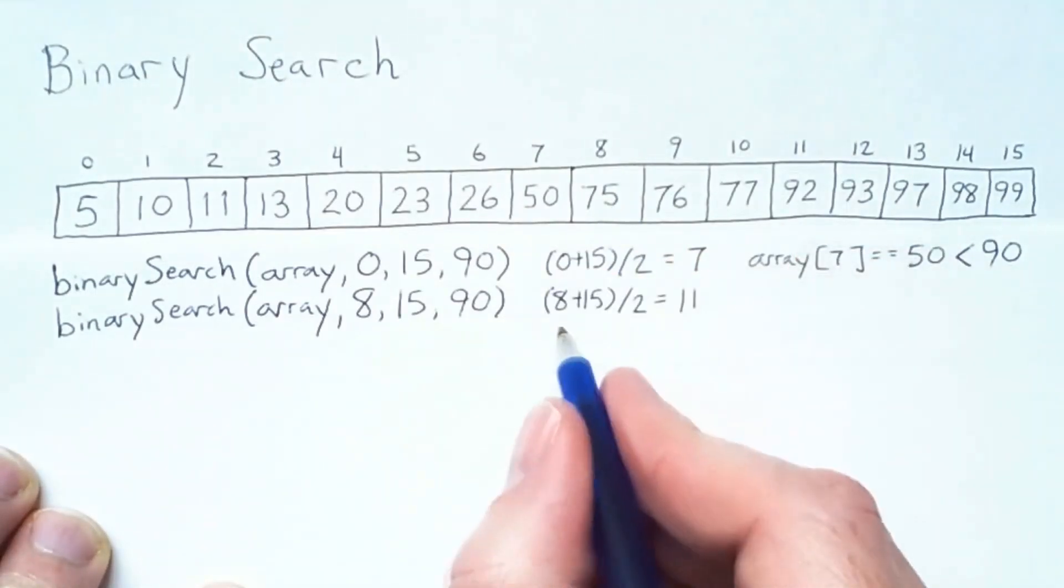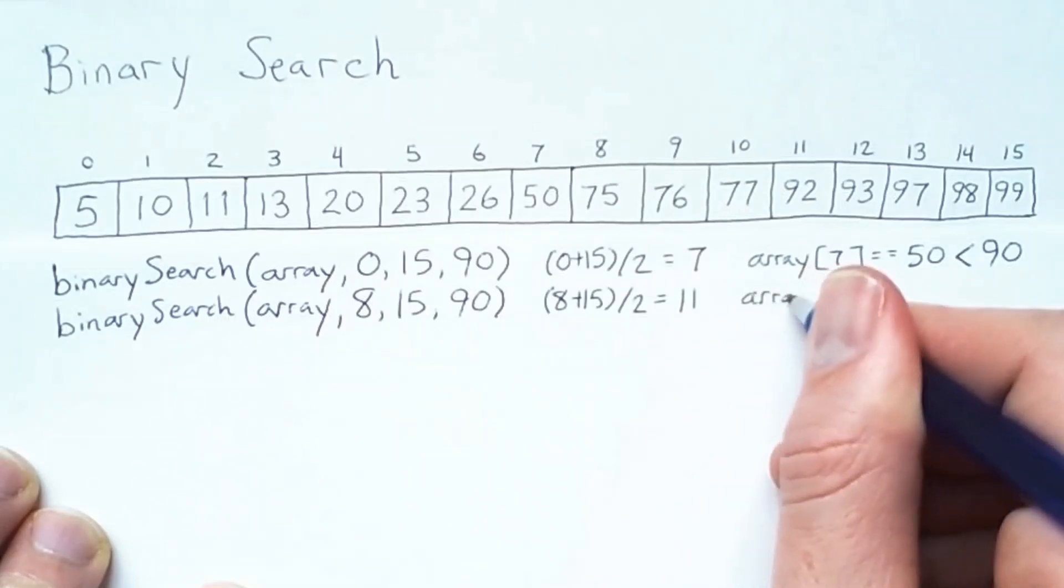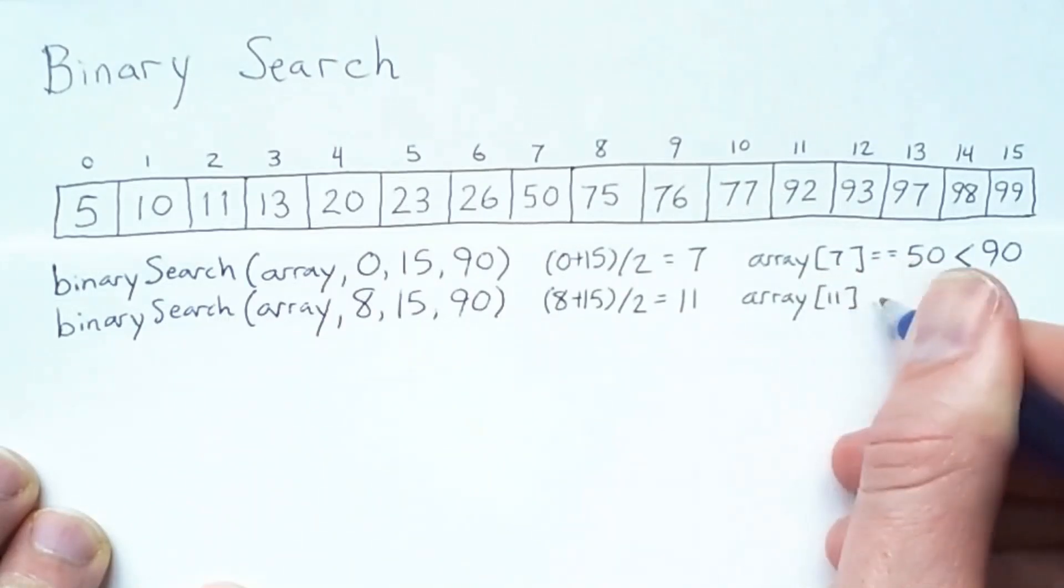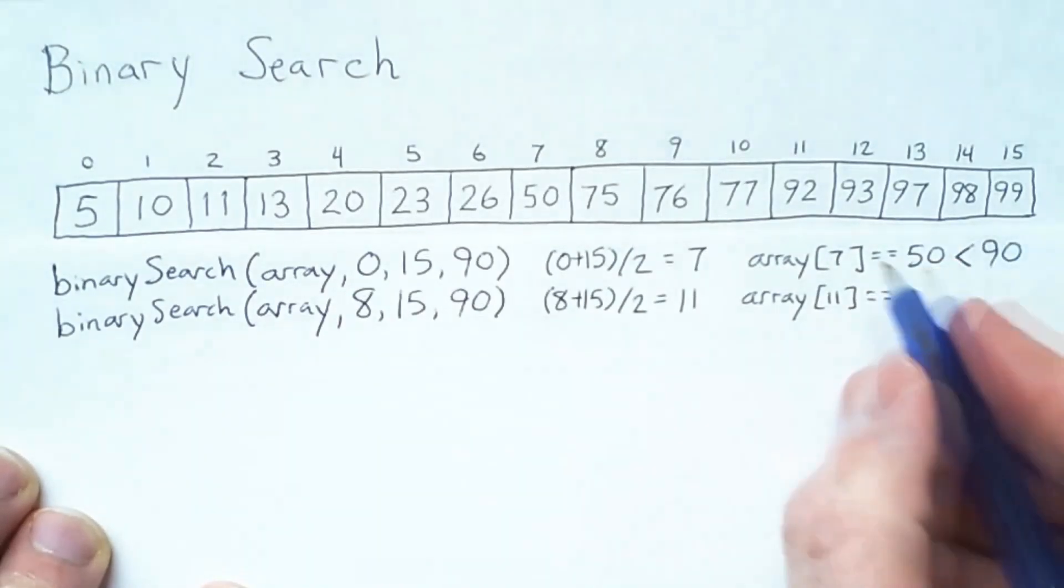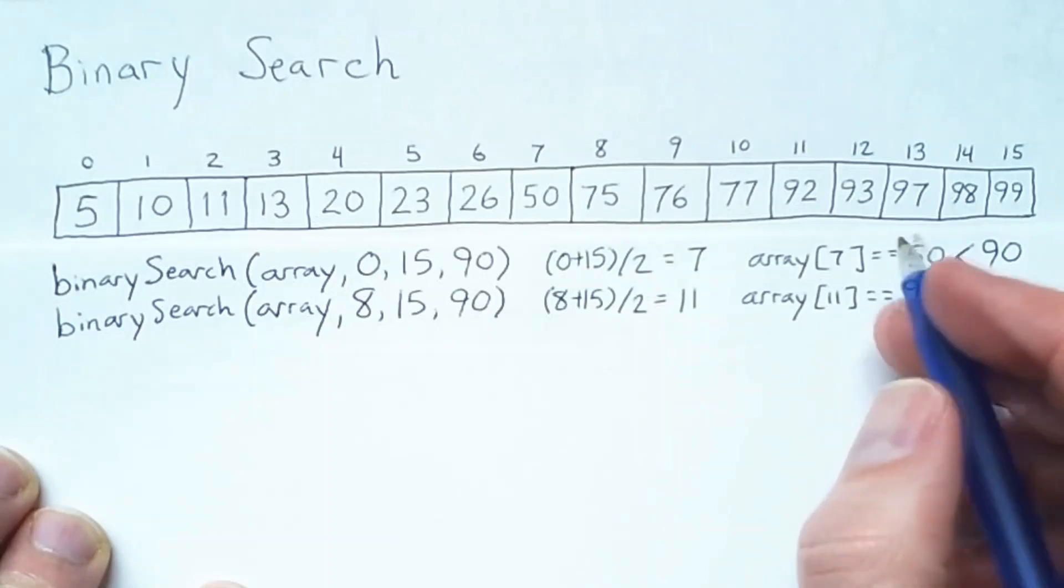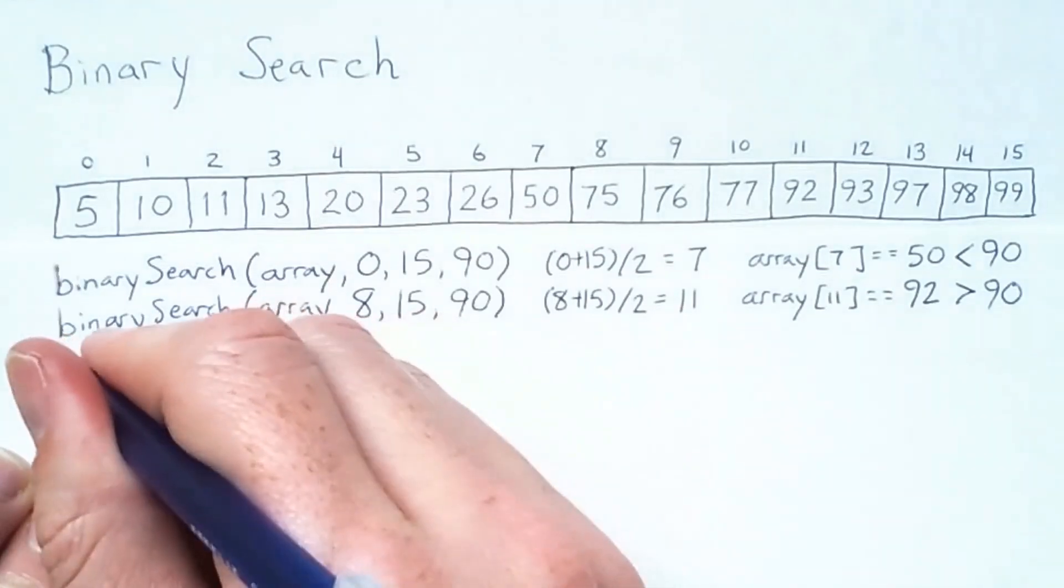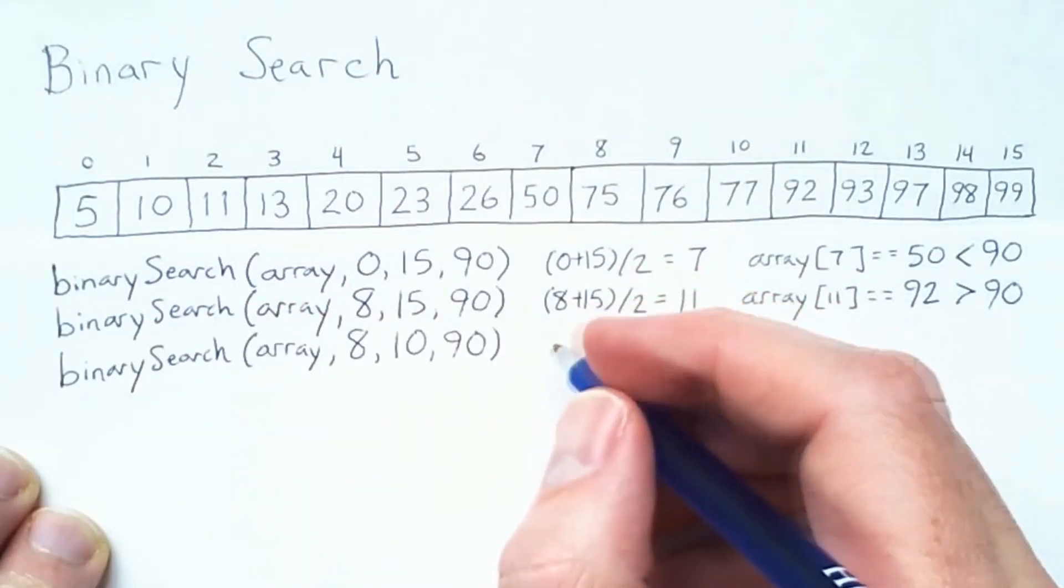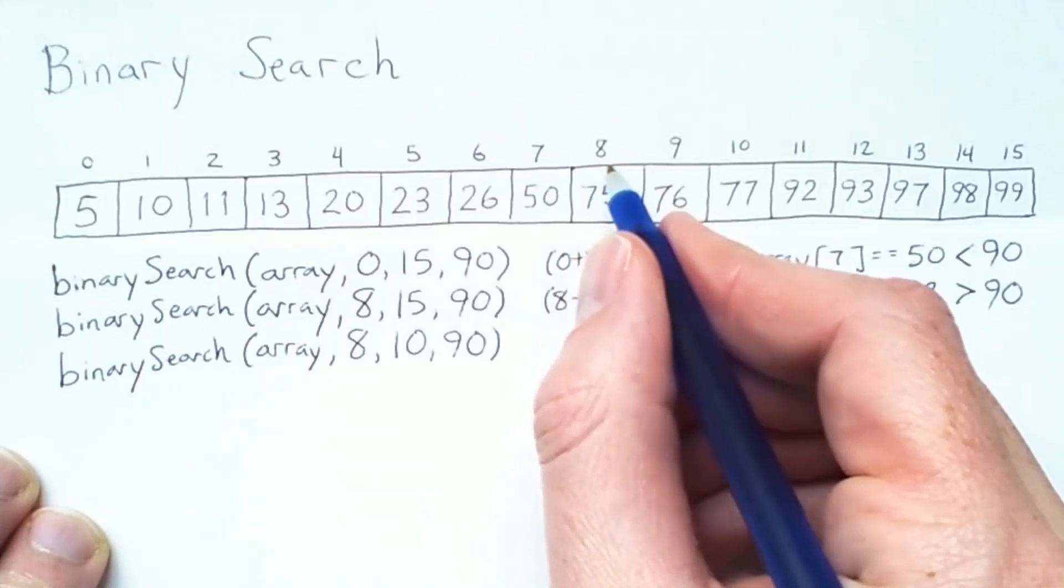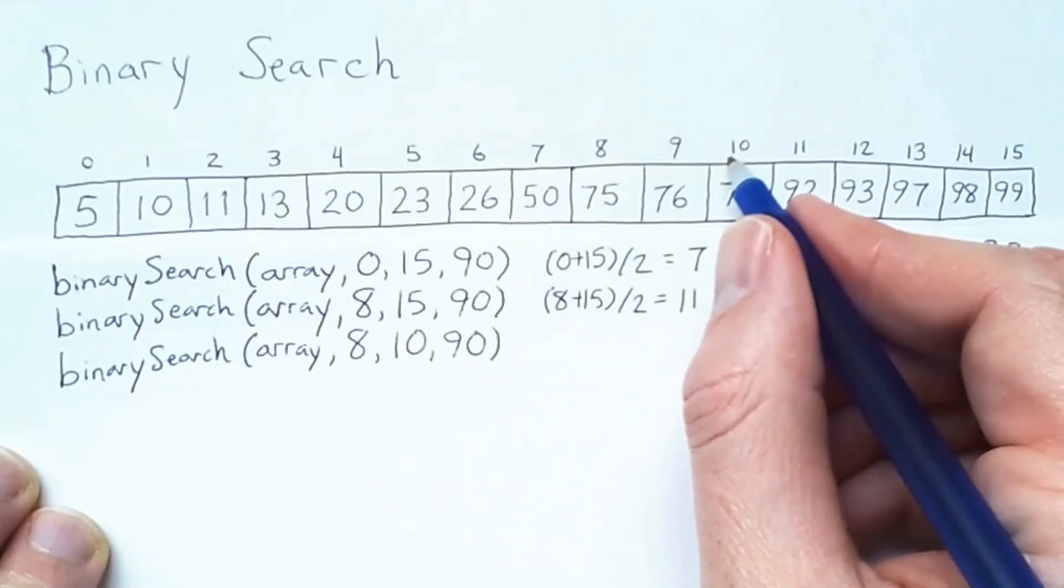The midpoint of the range 8 to 15 is 11. The value there is 92, and 92 is greater than our search key of 90. So we will now search to the left of 92, but still within the sub range 8 to 15. Our lower bound remains index 8, but because we just checked index 11, when we go to the left, our upper bound is index 10.